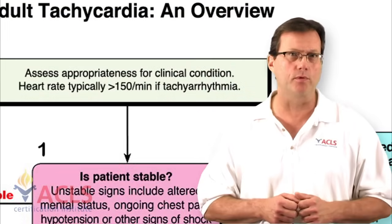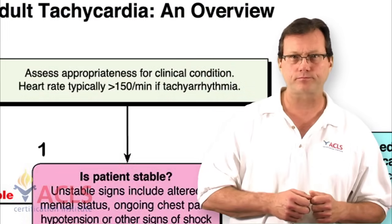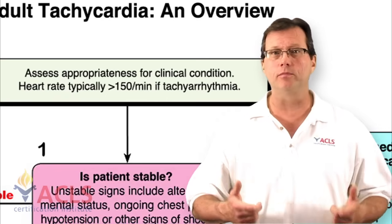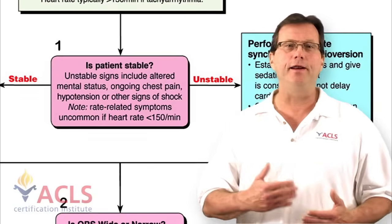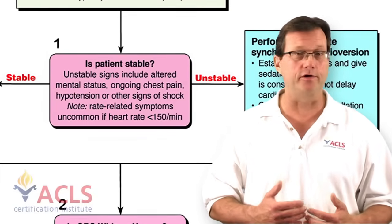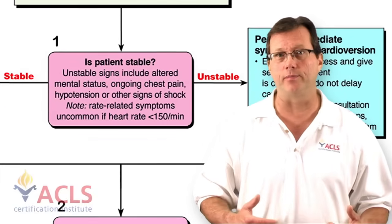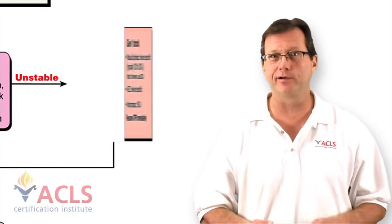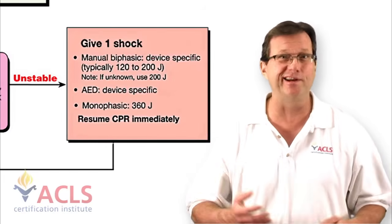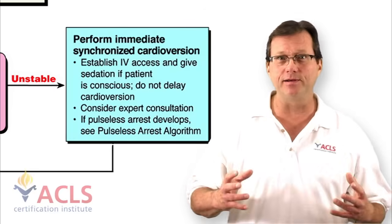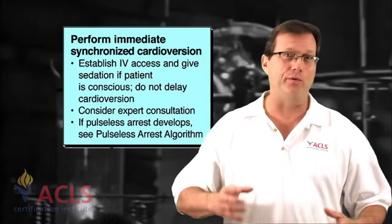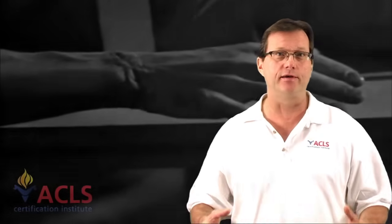So again, 150 is the magic number we're looking at. The first thing you're going to assess for, always, is whether your patient is stable or unstable. Any unstable tachycardia is going to receive some form of electrical therapy — whether it's narrow complex, wide complex, regular, or irregular. A symptomatic hypotensive patient showing signs of shock with a tachycardic rhythm above 150 is going to receive electrical therapy.